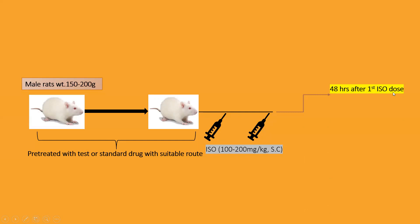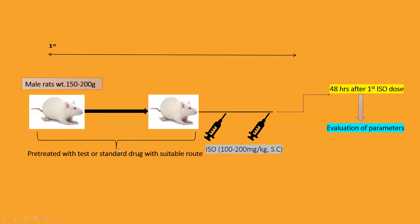After 48 hours of the first dose of isoprenaline, anesthetize the animal, remove serum for biochemical estimation, and sacrifice the animal for various parameter evaluations. For example, if you start pre-treatment on day one and your treatment is for 28 days, then on day 29 you administer the first dose of isoprenaline subcutaneously. After 24 hours, administer the second dose. After another 24 hours — at day 31 — you can evaluate the parameters, as the 48-hour period is completed and you can begin evaluating various parameters.